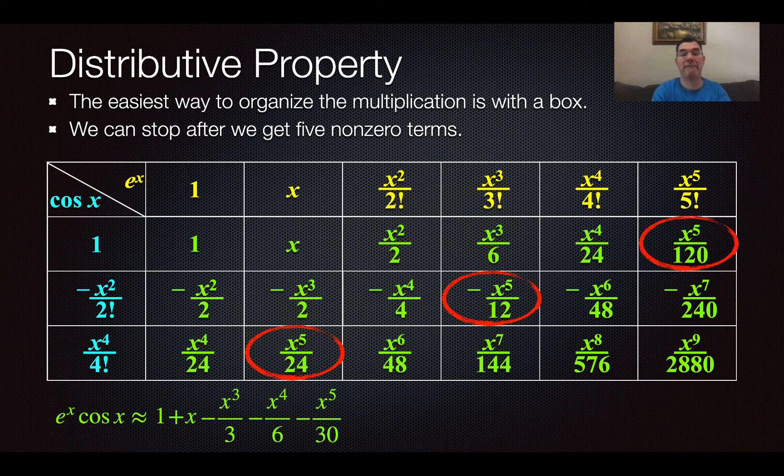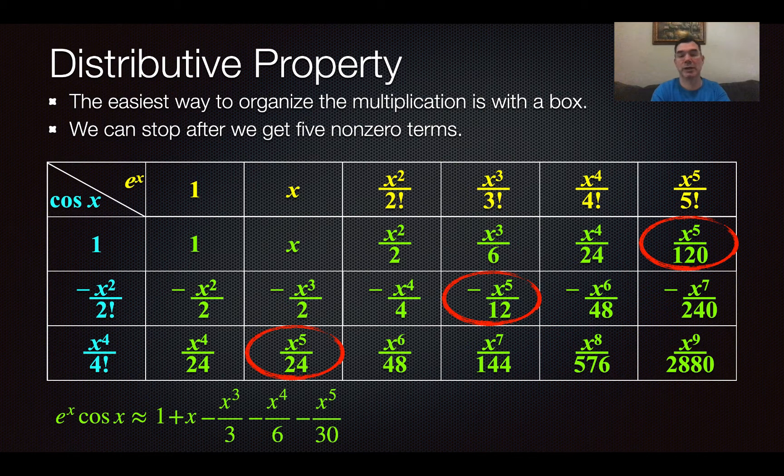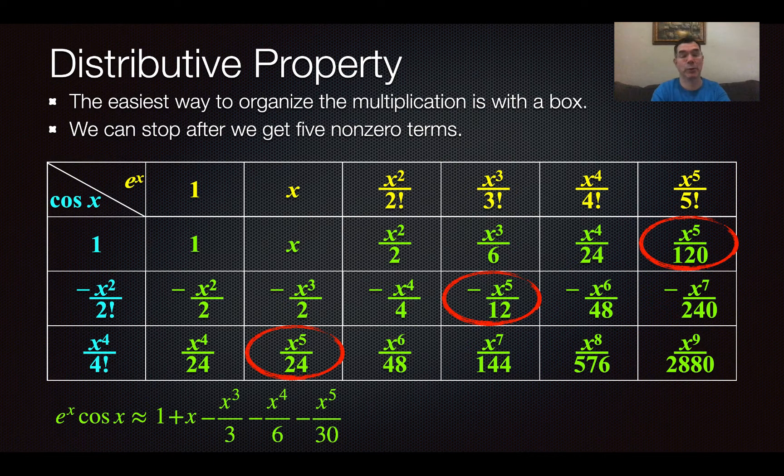And so now I have five non-zero terms, and so that is my Maclaurin series for the function e to the x cosine x with five non-zero terms. If I needed more, I would have added more columns, more rows, and done more multiplications. But I really didn't need more, so that is my Maclaurin series.